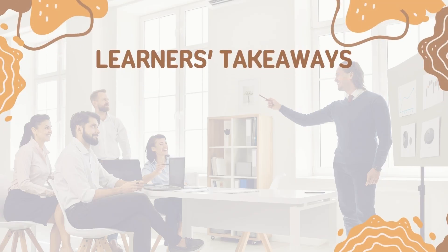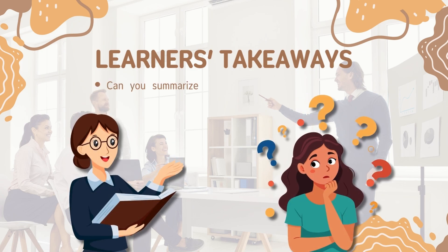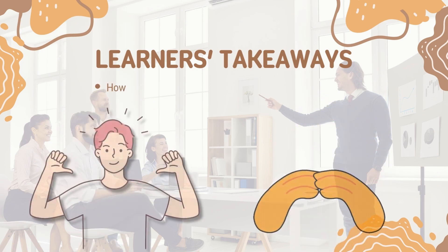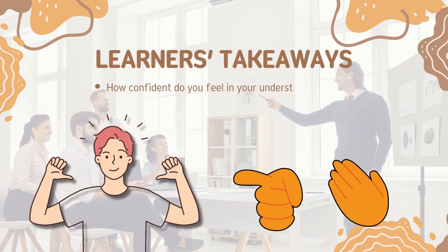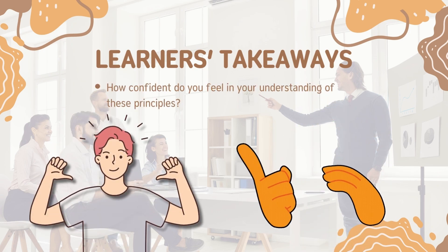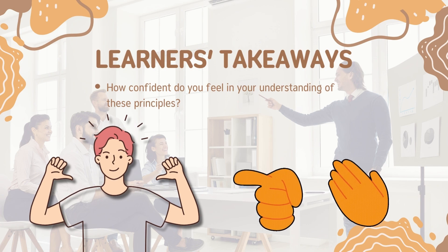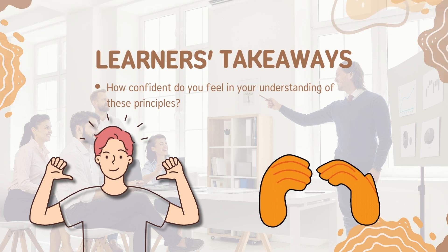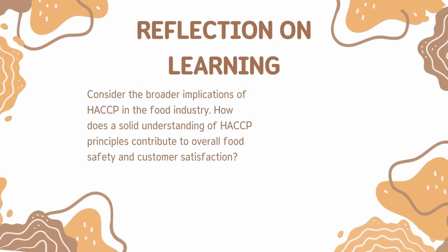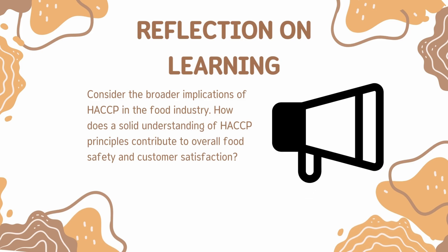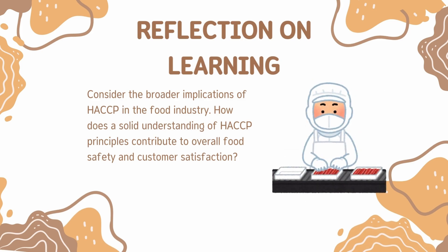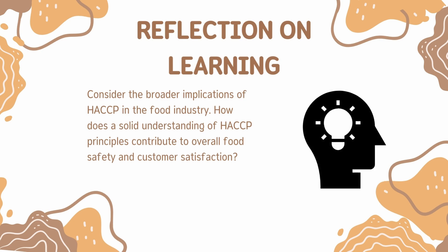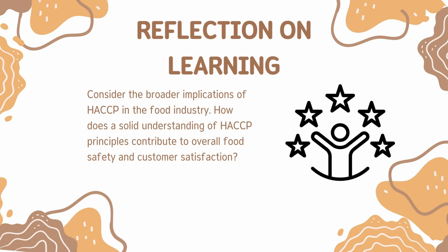Learners' takeaways: 1. Can you summarize each of the seven principles of HACCP in your own words? 2. How confident do you feel in your understanding of these principles? For reflection on learning: Consider the broader implications of HACCP in the food industry. How does a solid understanding of HACCP principles contribute to overall food safety and customer satisfaction?